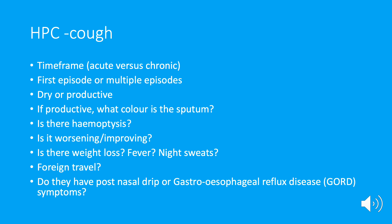With a cough, we want to look at the time frame — is this an acute or a chronic problem? That's really important. If it's been going on for three weeks, much more likely to be something infective. If it's been going on for months and getting progressively worse, we're more likely looking at something like asthma or COPD. Is this a one-off episode or have there been multiple similar episodes? A really key question is whether it's a dry or a productive cough — a dry cough much more likely to be asthma, a productive cough more suggestive of an infective pathology.